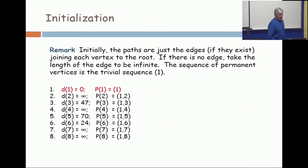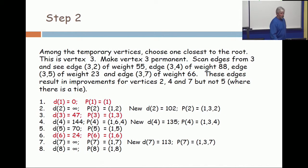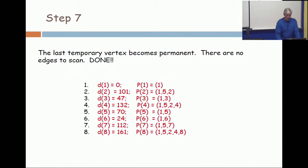So Dijkstra's algorithm, you continue to scan doing a breadth first search. Each time you scan, you take the least temporary vertex and make it permanent and do a scan from that vertex. And with each step, you get a new vertex that's marked permanent. So I'm not going to go back through all of these slides. And then the algorithm halts. And we want to prove that the information at the halting point is correct in every instance.